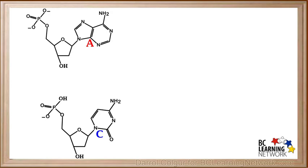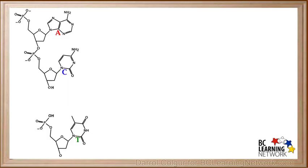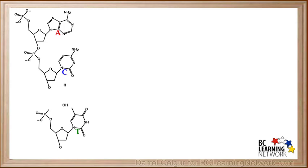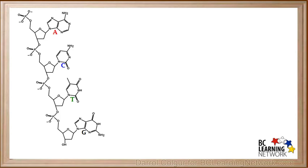Now we will consider two nucleotides: the top one has the base adenine and the bottom one has the base cytosine. An H from the top nucleotide and an OH from the bottom one combine to form water, and the two nucleotides bond together. We will discard the water molecule. Now we take the dinucleotide and introduce another nucleotide below it with the base thymine. As the top molecule loses an H and the bottom molecule loses an OH, they join to form a molecule with three nucleotides. After adding another nucleotide with guanine, we end up with this polynucleotide chain. Notice on this chain that a 5 prime carbon is on the top left and a 3 prime carbon is on the bottom left.